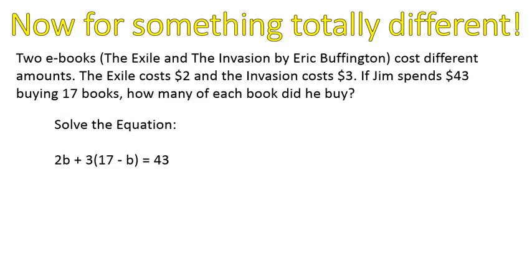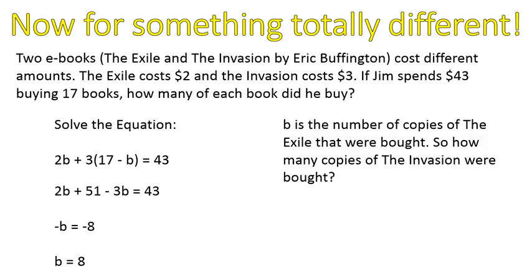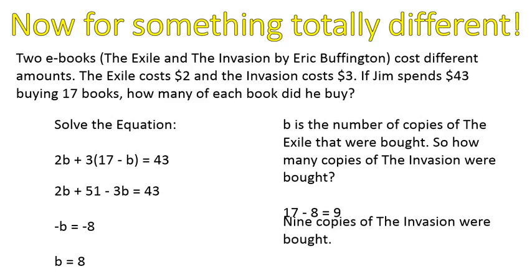Here's our equation: 2b + 3(17 − b) = 43. Distributing the 3 gives 2b + 51 − 3b = 43. Combining b terms: 2b minus 3b gives negative b. Subtracting 51 from both sides gives negative b = negative 8. Multiplying both sides by negative one gives b = 8. So eight copies of The Exile were sold. Seventeen minus eight leaves nine copies of The Invasion sold.